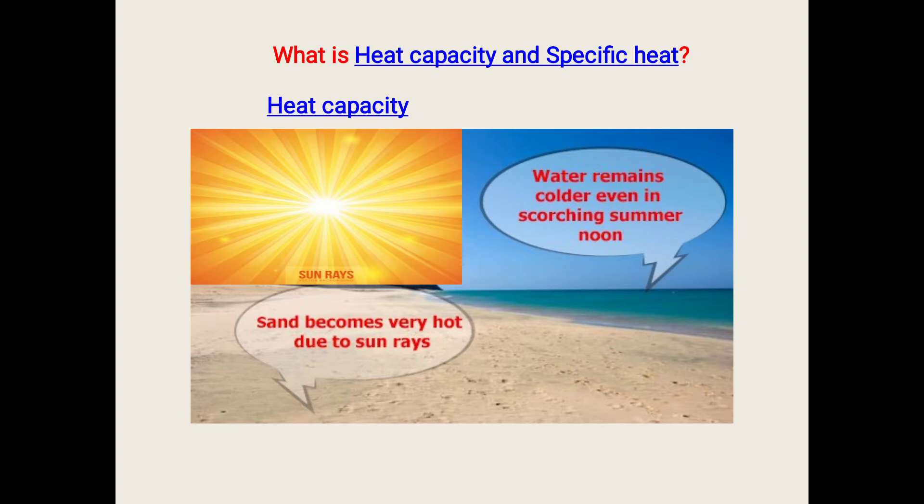Both sand and water are receiving the same amount of sun rays, that is heat energy. Then why is there a difference in the temperature of the sand and water? Why does this happen?